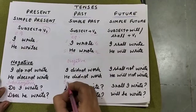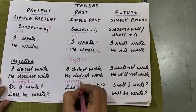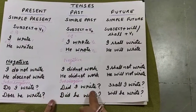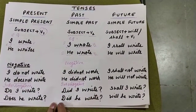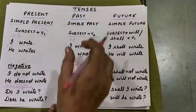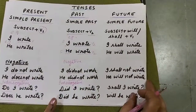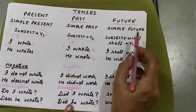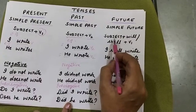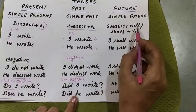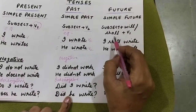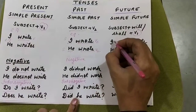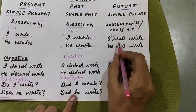And if we have to change it into interrogative, we will bring the helping verb out. So 'did I write?' or 'did he write?' This is the way how we do simple past tense. Now we will move on to simple future. In simple future, we have a subject and we add 'will' or 'shall' with the first form of the verb. So with I and we, we use 'shall'.